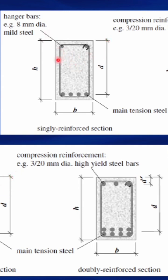Also, we need the reinforcement to hold the shear links that we are going to provide. So that is why we provide the hanger bars. And this hanger bar is actually equal to the area of the minimum required reinforcement.